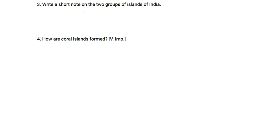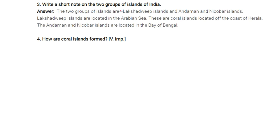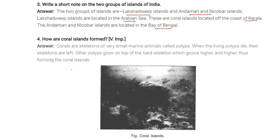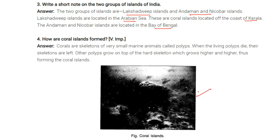Write a short note on the two groups of islands of India. The two groups are: the Lakshadweep Islands, located in the Arabian Sea as coral islands off the coast of Kerala, and the Andaman and Nicobar Islands, located in the Bay of Bengal.